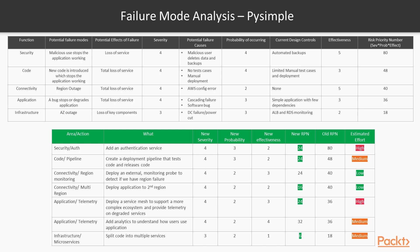We have other failure modes too. What happens if we deploy code that has a problem, given we have limited manual test cases and a manual deployment process? That scores a 48. We have our regional outage at 40, because everything is in a single region. We have application bugs, which is again a high value. And then there's an AZ outage — but we've already got multi-AZ with redundant ECS and ALBs, so that score is quite low. So here's our ranked set of things to address. Security is probably number one.